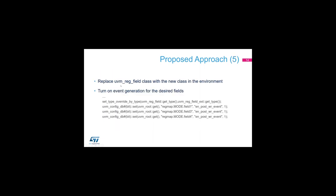We now have a new UVM register field class to substitute for the original. Once this new class is in place, we can turn on trigger generation for the required fields. For example, suppose in our case study we only need to fire an event for fields one, three, and four of register_mode — not every single field. With this simple configuration we turn on trigger generation for fields one, three, and four, synchronizing the verification environment with the values of those three fields.